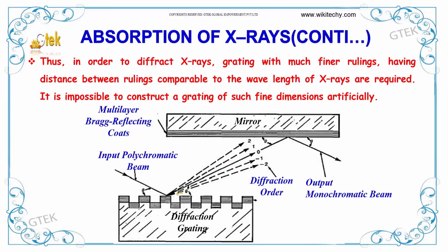One beam comes out in different orders: 0, minus 1, minus 2, 1, 2, etc. It reflects on the black reflecting coax, and the output is a monochromatic beam. So the input polychromatic — multicolor — beam is converted into a single-color monochromatic beam.